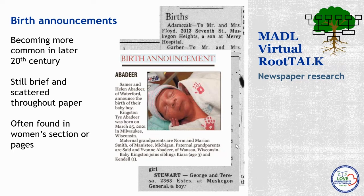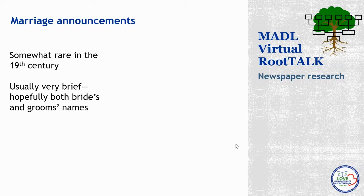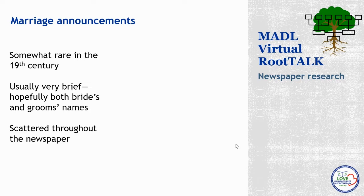Now let's move on to marriage announcements. Again, just like birth announcements, they're somewhat rare in the 19th century and will be very brief. Hopefully we get both the bride's and groom's names, but you never know. You might see a marriage announcement, a marriage license application list, or — much more common in the 20th century — an engagement announcement. The engagement announcement and a marriage license application aren't really proof that the marriage took place; it's the marriage announcement itself that talks about the marriage occurring that is really great proof of marriage and can substitute for that vital record. Again, going to be scattered throughout the newspaper, often in the local social columns.